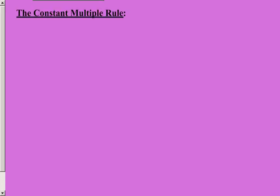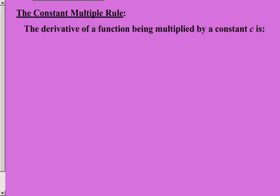Another rule is referred to as the constant multiple rule. This one's a little helpful, can help unclutter a problem before you have to get into it. The derivative of a function being multiplied by a constant c is: we have the derivative with respect to x of some function that is being multiplied by some constant. The rule basically says you may pull that constant or factor out in front of the problem and then execute the derivative of the function, and you will end up with the same result.